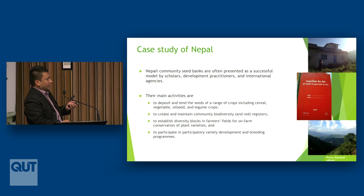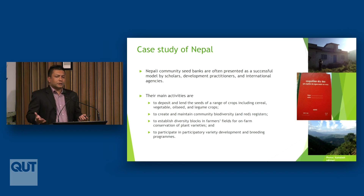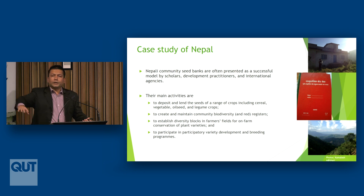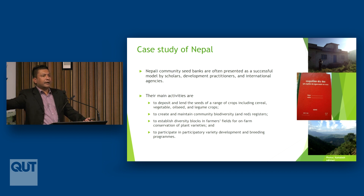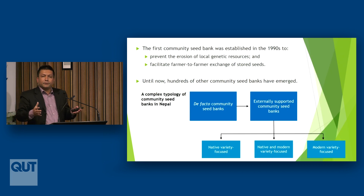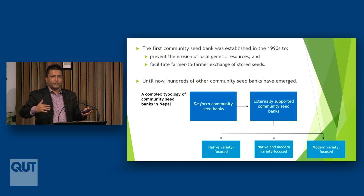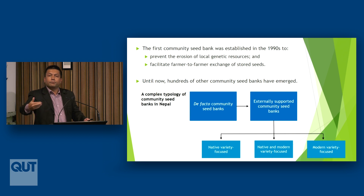Community seed banks also establish diversity blocks in farmers' fields — assigning members to allocate specific pieces of land for on-farm conservation of varieties that are threatened with disappearance. Formation of diversity blocks is considered really very important. Members also regularly cultivate and multiply seeds using these mechanisms.